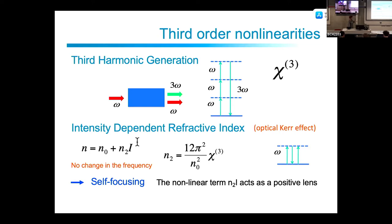This intensity-dependent refractive index term is responsible for self-focusing: a collimated beam starts to focus because the refractive index depends on intensity. This can be useful for increasing intensity, but it can also cause damage — the intensity keeps increasing due to this term and can reach the range of electrical breakdown, destroying the material.